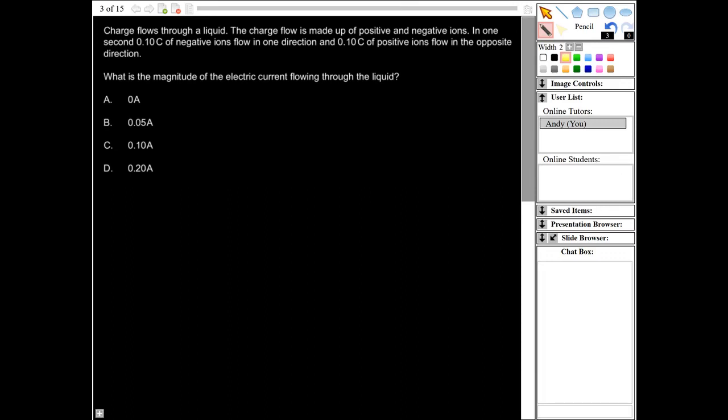So current is the rate of flow of charge. Now it says that this happens in one second. So 0.1 Coulombs flow in one second, so that's a current of 0.1 amps. So we've got 0.1 amps from the negative ions, and then we've got another 0.1 amps from the positive ions. So the total electric current flowing through will be the sum of those two, which would be 0.2. So the answer is D.